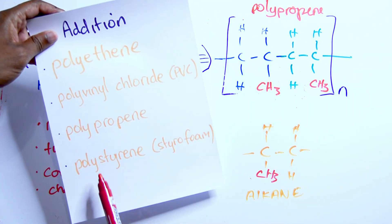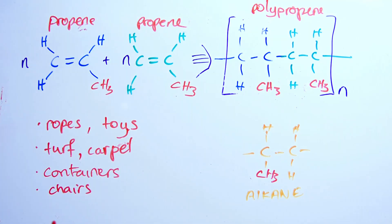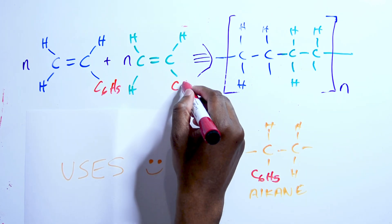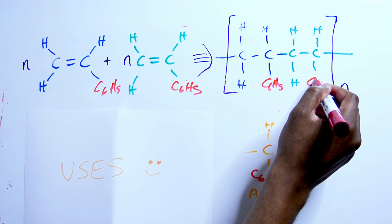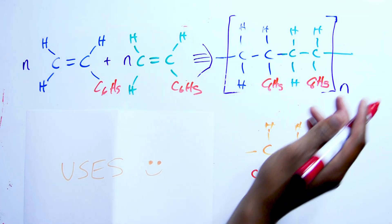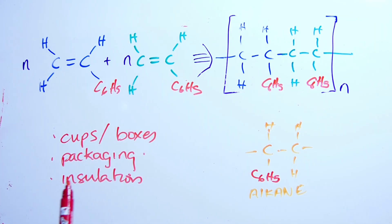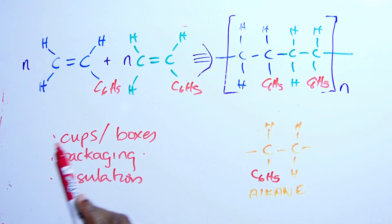The last one on the addition list is polystyrene, which is also called styrofoam. For polystyrene, the group we're throwing in there is C6H5. The uses of styrofoam include cups, boxes, box lunches, packaging, and certain types of insulation — anywhere you see styrofoam, that's the uses. So that's it for addition polymers.